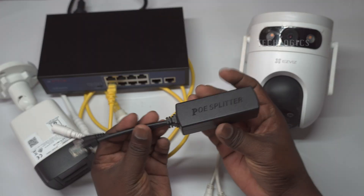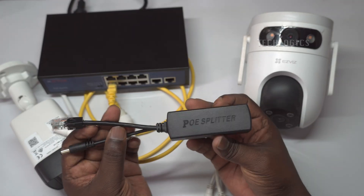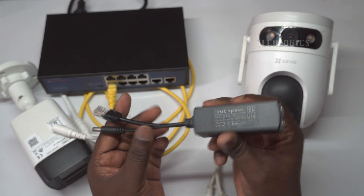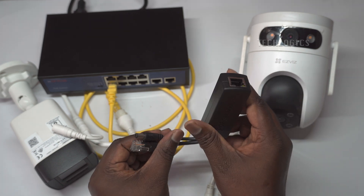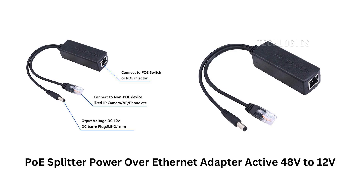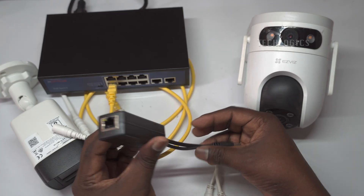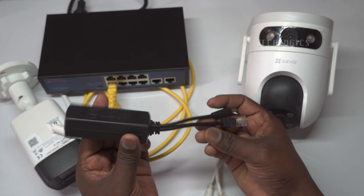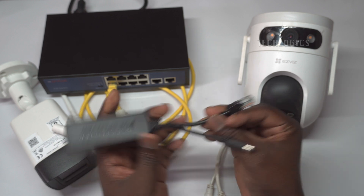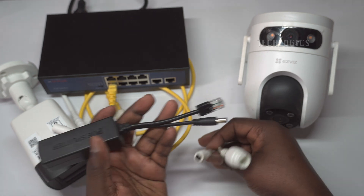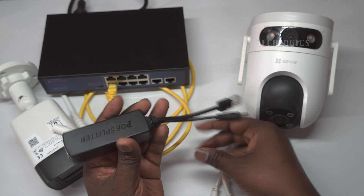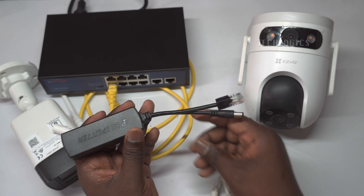Let's understand this accessory. A PoE, power over Ethernet, splitter is a device that separates data and power from a single Ethernet cable coming from a PoE-enabled switch or injector. It converts the incoming 48V power to a lower voltage, commonly 12V, and provides two outputs: one Ethernet port for data connectivity and one DC output jack for powering devices.